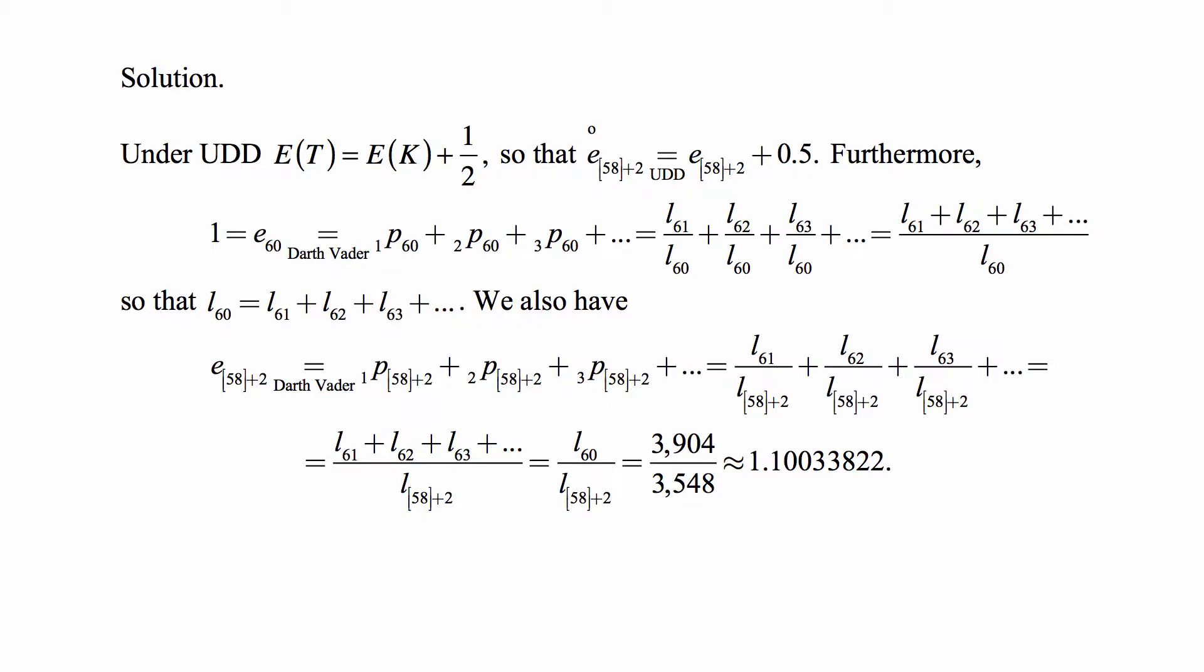So all we need to do is just work with the curtailed life expectancies and everything will work out because at the end we'll just add one-half.